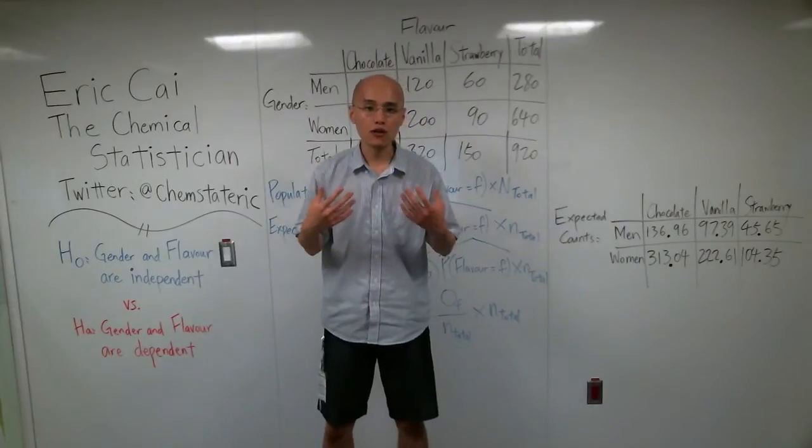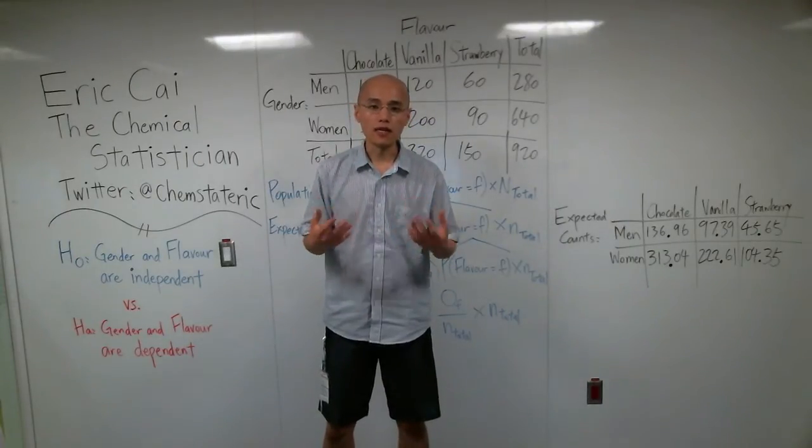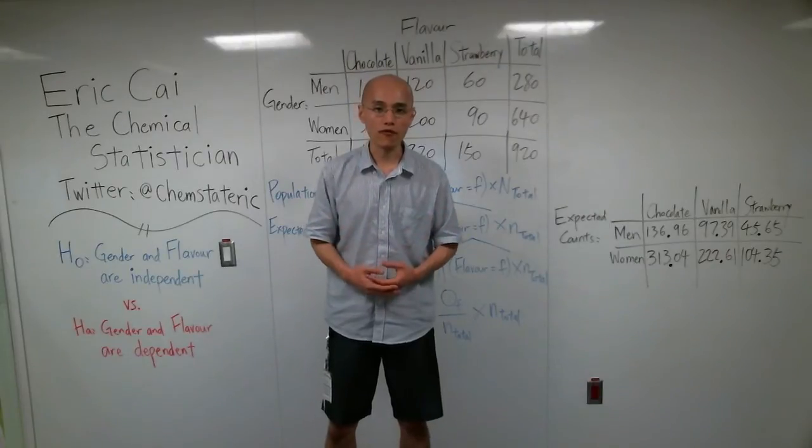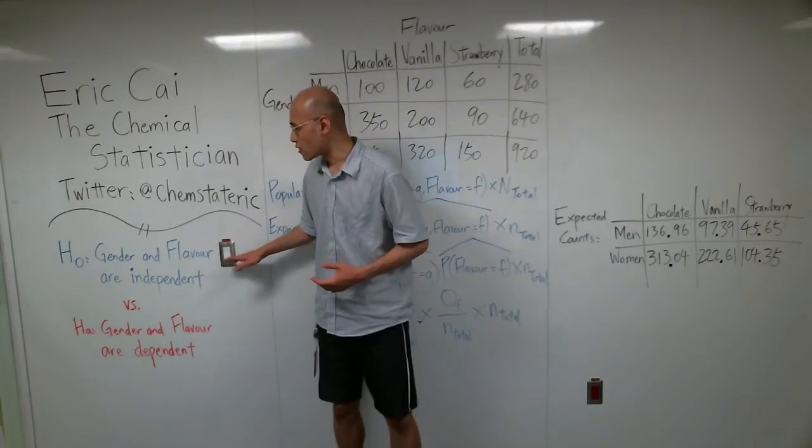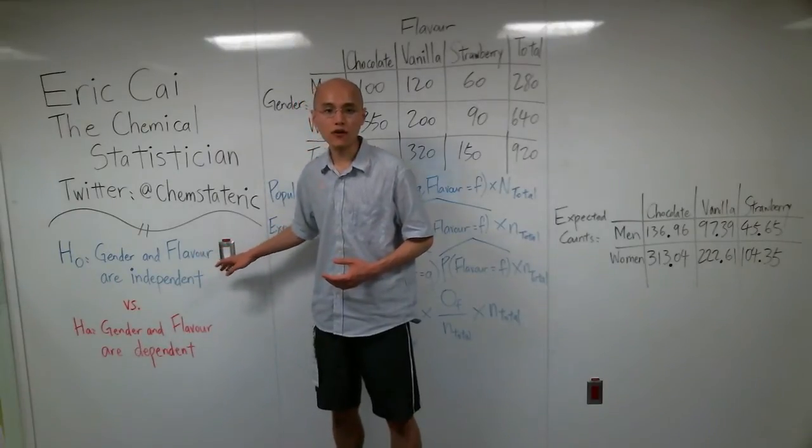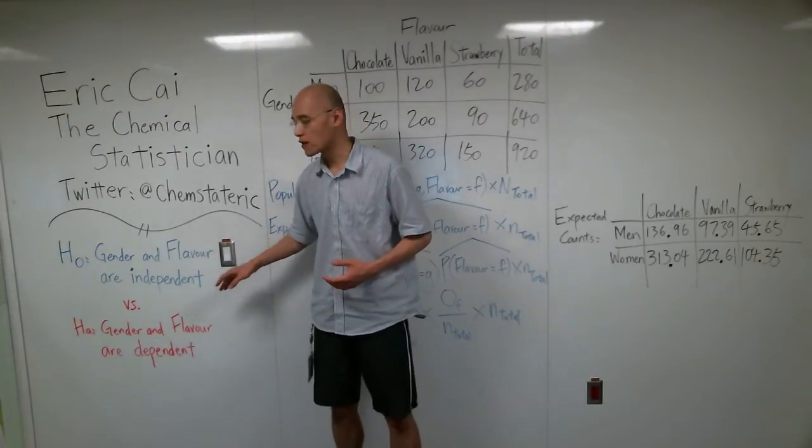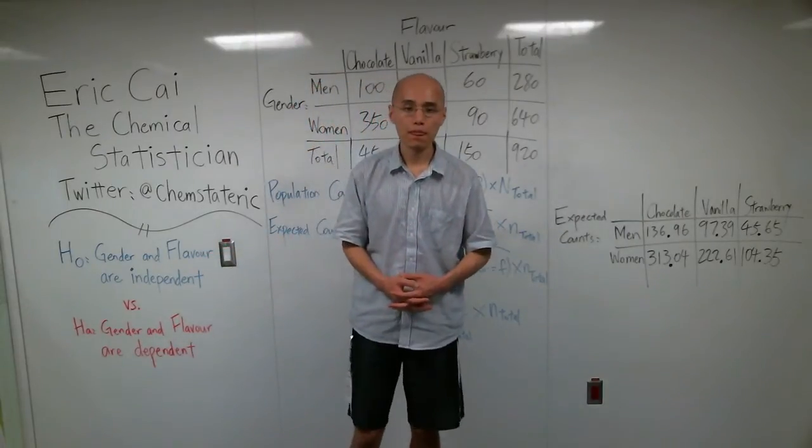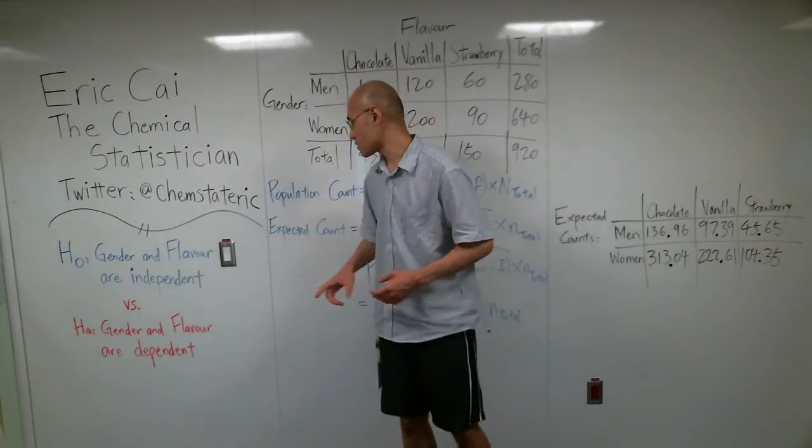Now, remember that expected counts are necessary for performing tests of independence between two categorical random variables. The null hypothesis is that gender and flavor are independent, and the alternative hypothesis is that gender and flavor are dependent.